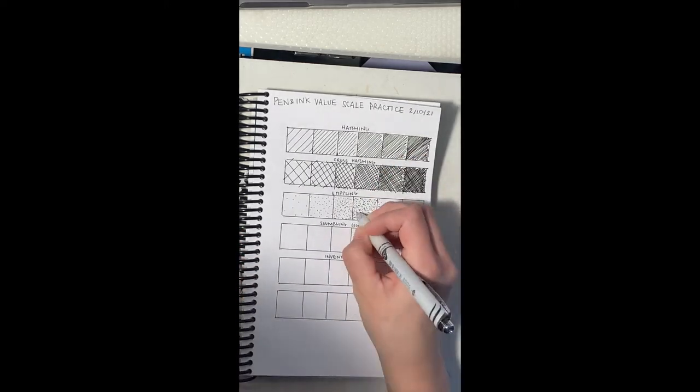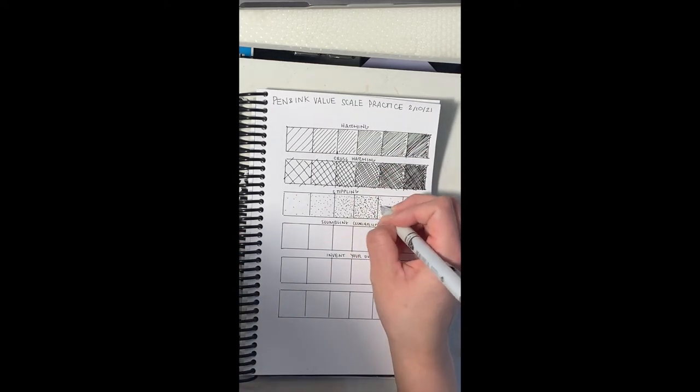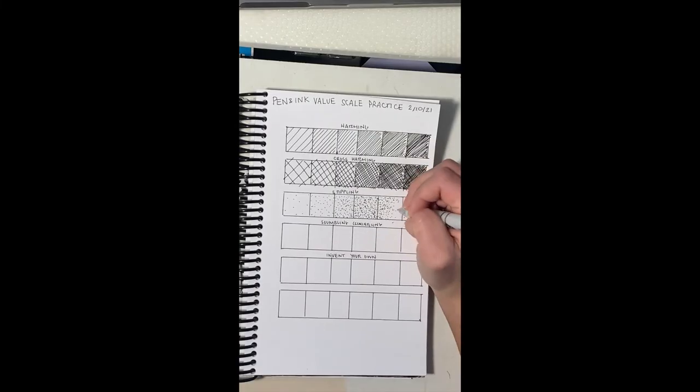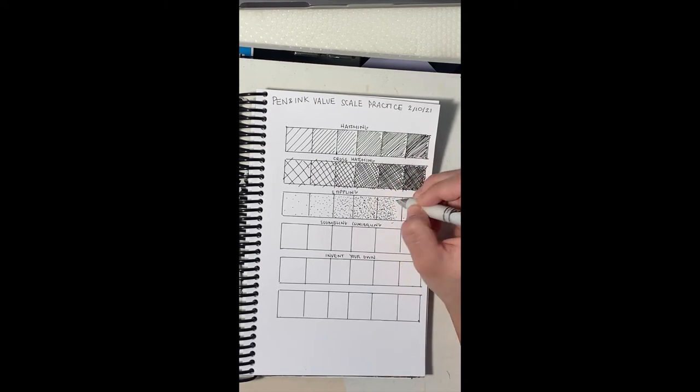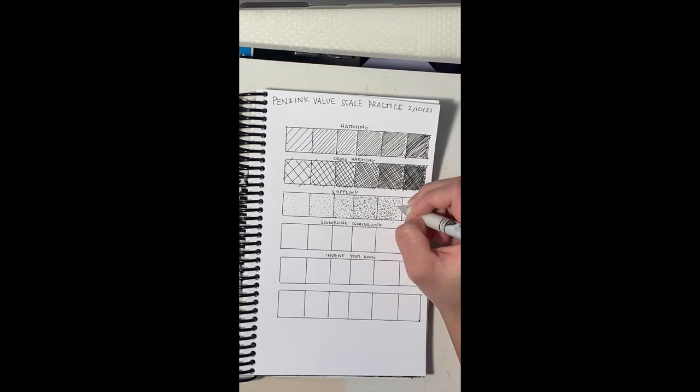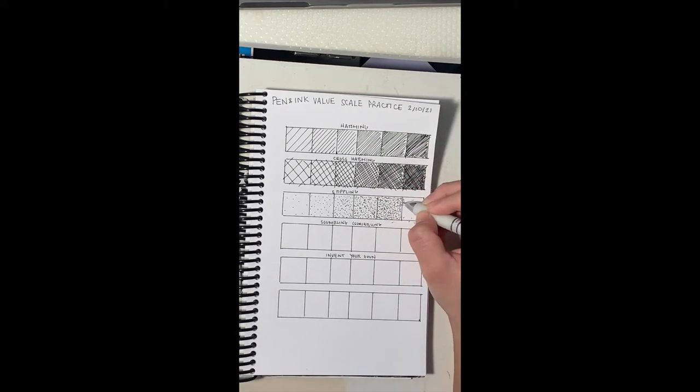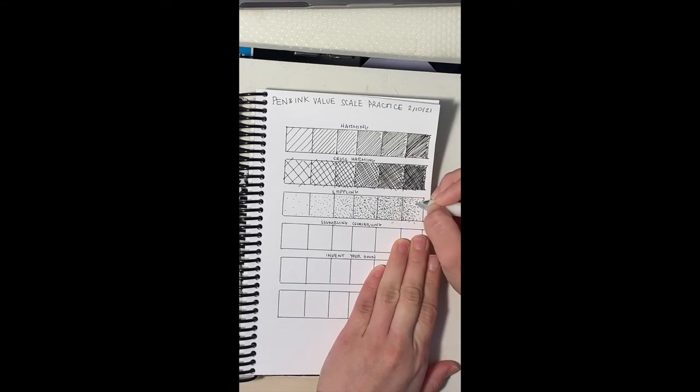But if you do it carefully, it can create really nice values. And you can see my head kind of pokes into this because sometimes you got to get close to see where you could add more dots. You could add them very close together, almost to the point where it's just completely filled in.